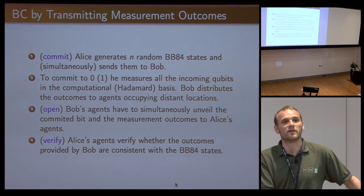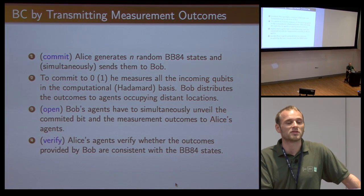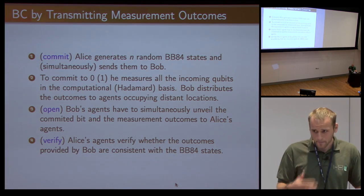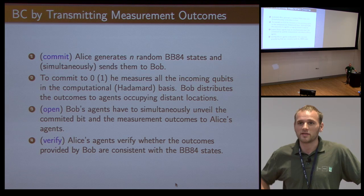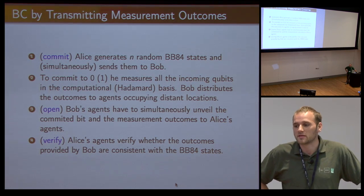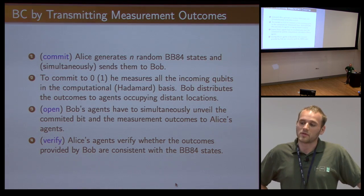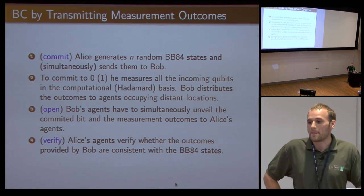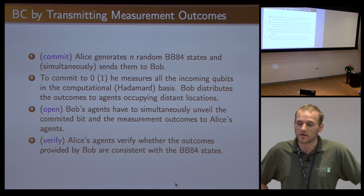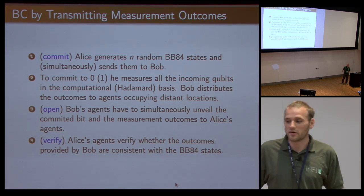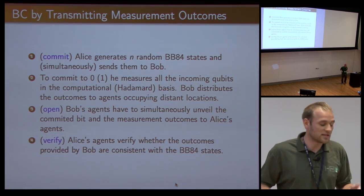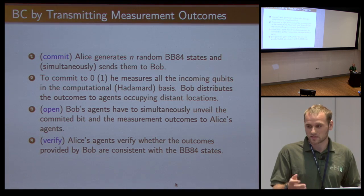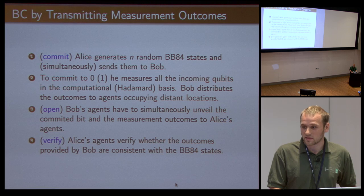In the open phase, these agents just pass this information to Alice's agents who are standing next to them, and then these agents verify if this classical information is consistent with the BB84 states that Alice generated at the beginning. Some of the intuition why this evades the no-go theorem is because in the no-go, Bob keeps everything quantum and delays all his measurements. But in this case he cannot do it because he needs this information to be present at two points which are far away, so he's forced to measure during the commit phase. He cannot delay it.